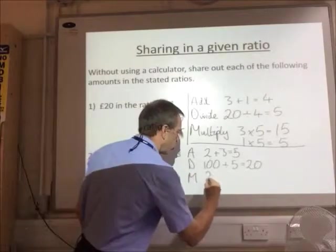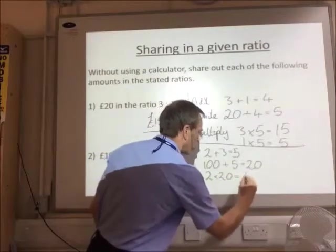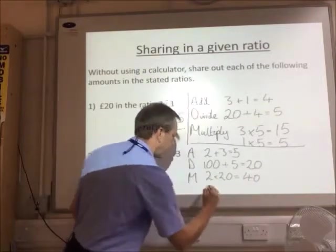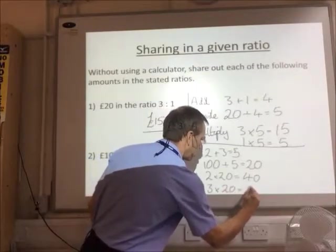So I've got 2 times 20 equals 40, and 3 times 20 equals 60.